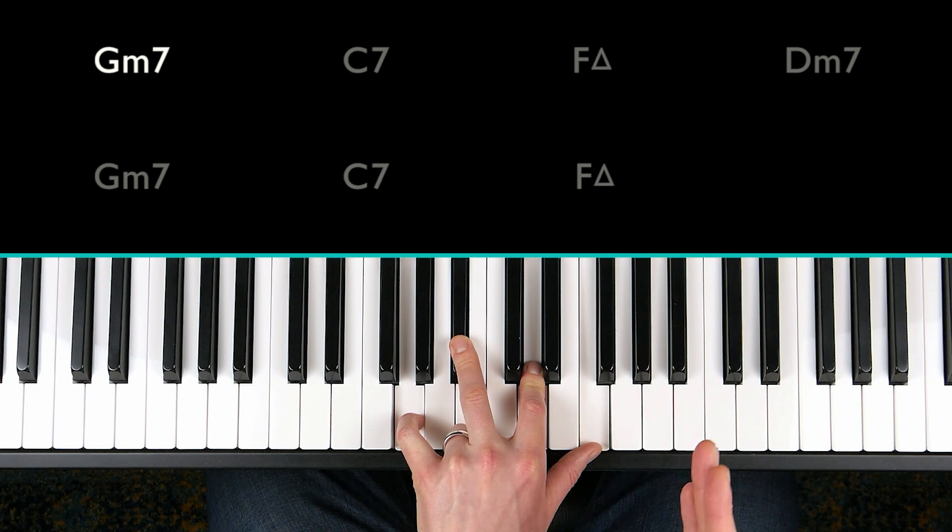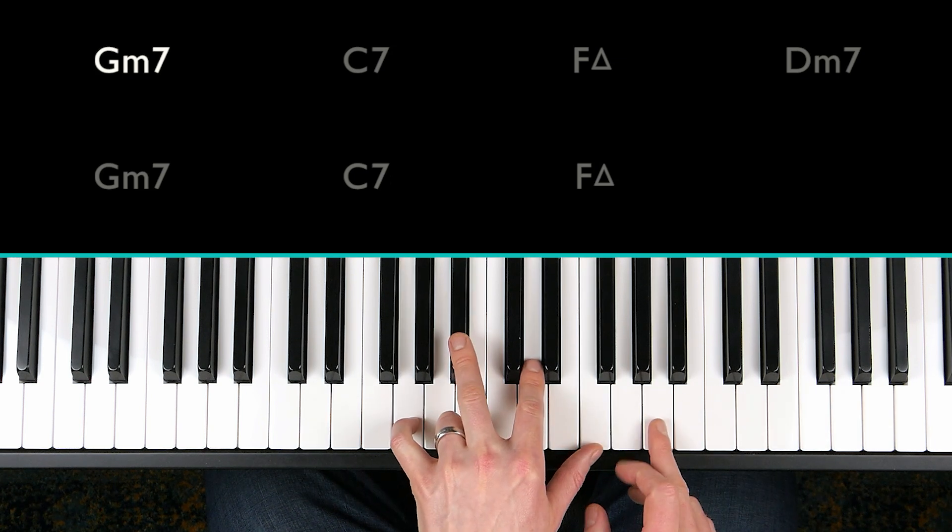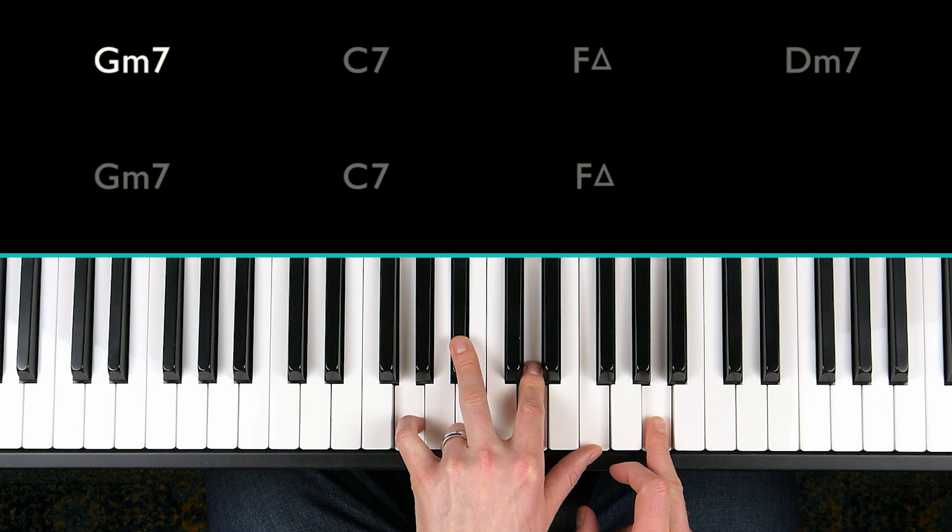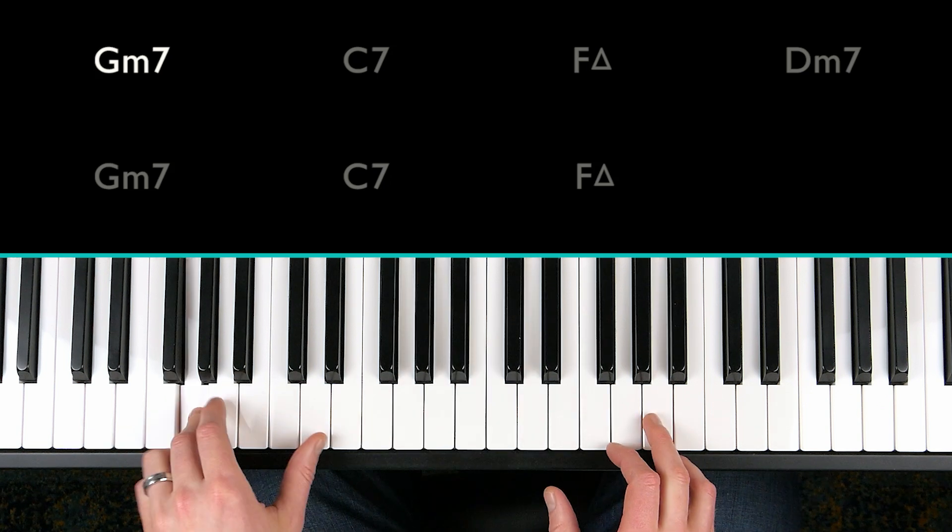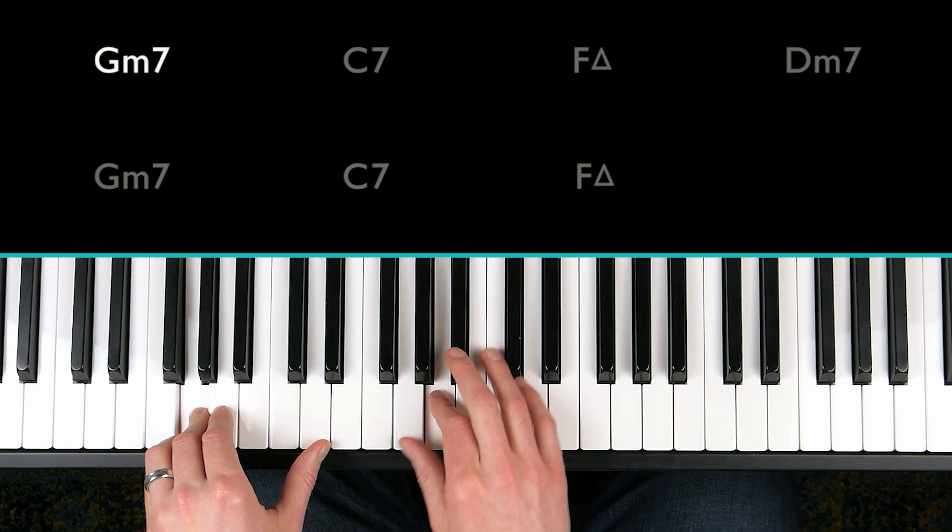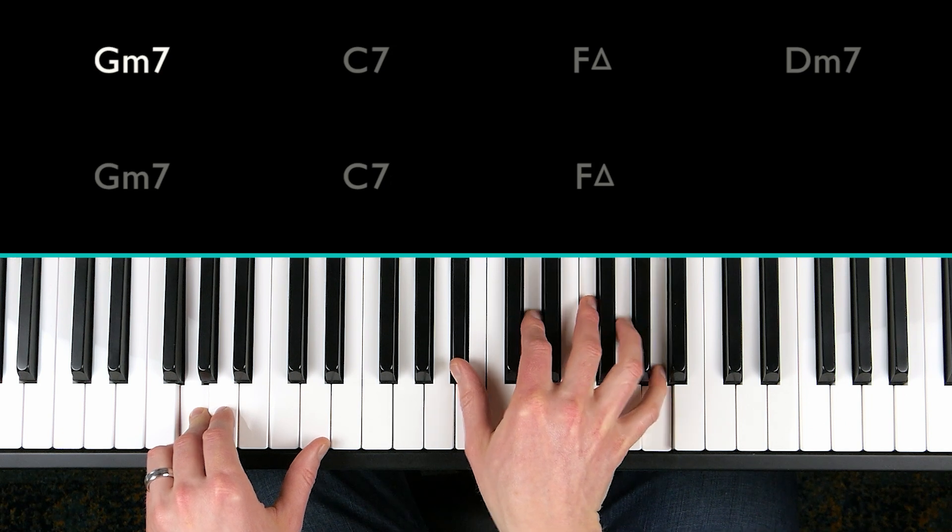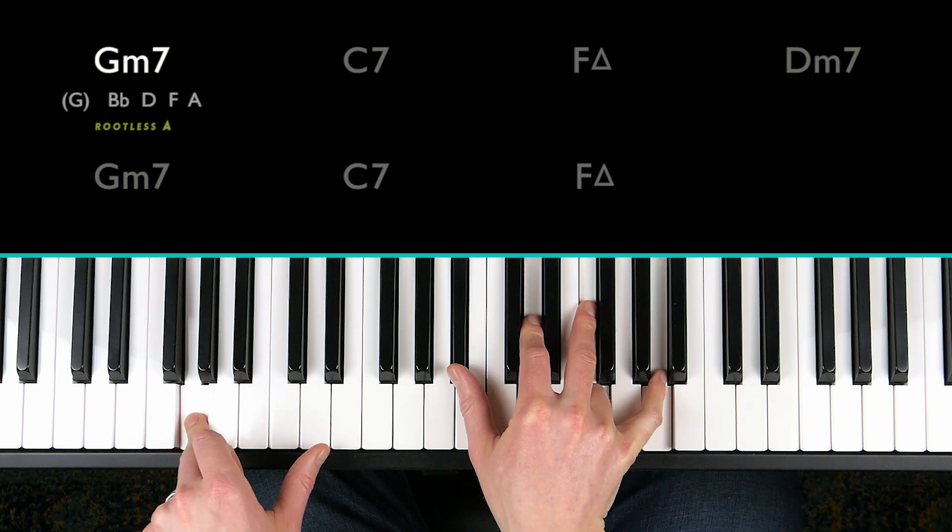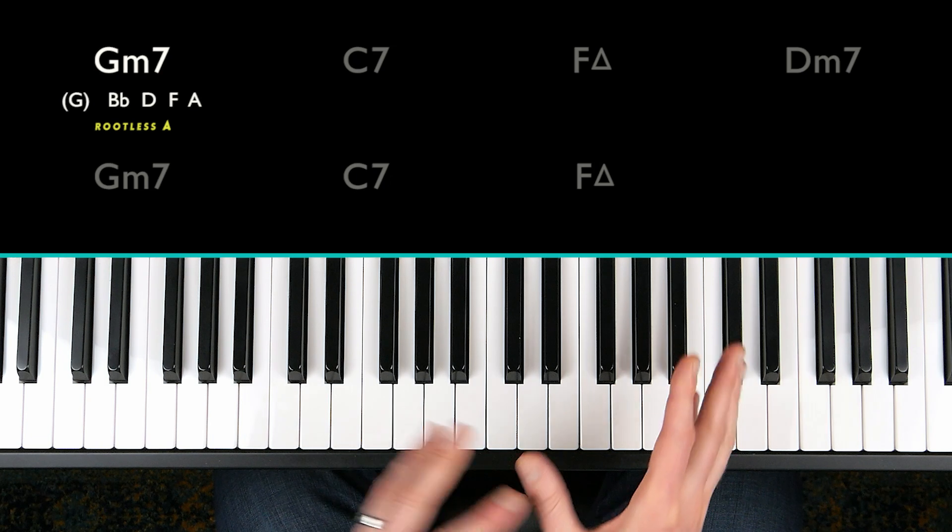So which chord voicing could we use that has the ninth as its top note? Well, the rootless chord voicings are great for this. Find the minor third, build a major seven chord, B flat major seven. This would be an ideal voicing for this situation.